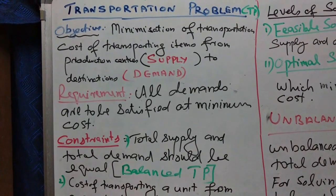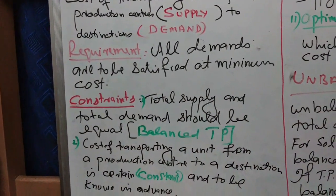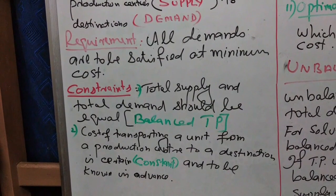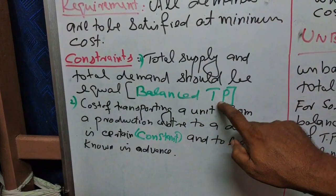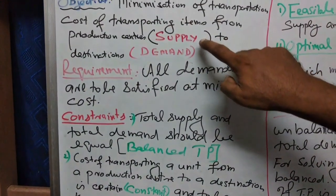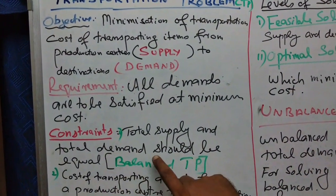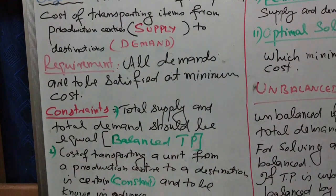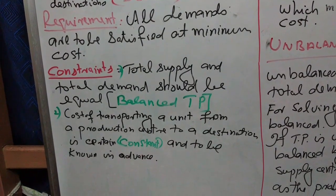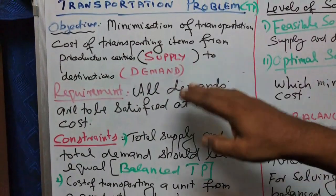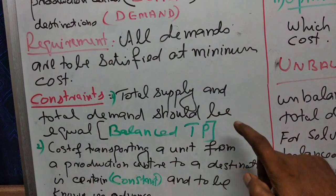The prime objective is at minimum cost. The conditions in such subjects are termed as constraints. The first constraint and the prime constraint is the problem should be a balanced problem. We have two sectors, supply and demand. The total supply and total demand at different sectors should be equal — the total demand is equal to total supply. It is called a balanced transportation problem.